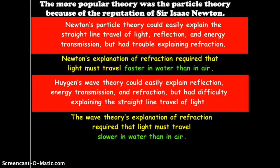Now, Huygens' wave theory could easily explain energy transmission and refraction, but had difficulty explaining the straight line travel of light. And with this, it would basically be required that light traveled slower in water than in air.